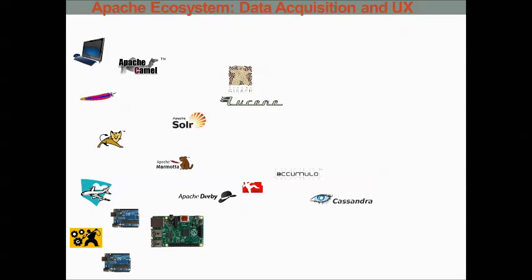Apache Marmotta is a standalone linked data platform that allows you to build custom applications that relate significant business objects — for example, to report your business state. Sesame is an open source resource description framework that Marmotta uses. While not an Apache project, it ties into the narrative by being a foundation to Marmotta. MySQL, PostgreSQL, or H2 are the only supported database backends for Sesame when used in conjunction with Marmotta, although none of these databases are Apache projects.